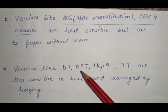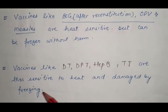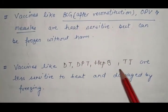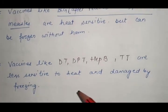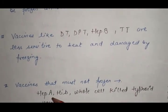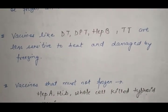Vaccines like DT, DPT, Hepatitis B and TT are less sensitive to heat and damaged by freezing, so these vaccines should not be frozen. Vaccines that must not be frozen are Hepatitis A, Hib, and whole cell killed typhoid vaccines.